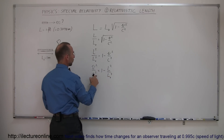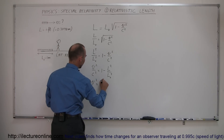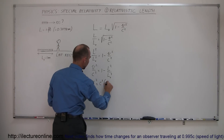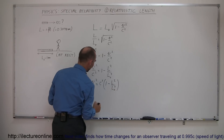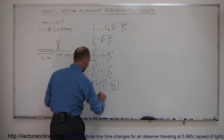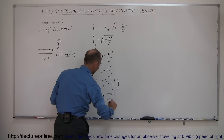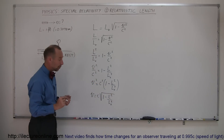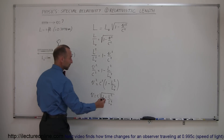Multiplying both sides by c squared, we get v squared equals c squared times the quantity 1 minus L squared over L₀ squared. Finally, taking the square root of both sides, v equals c times the square root of 1 minus L squared over L₀ squared. Now we can plug in the numbers to find v in terms of c.